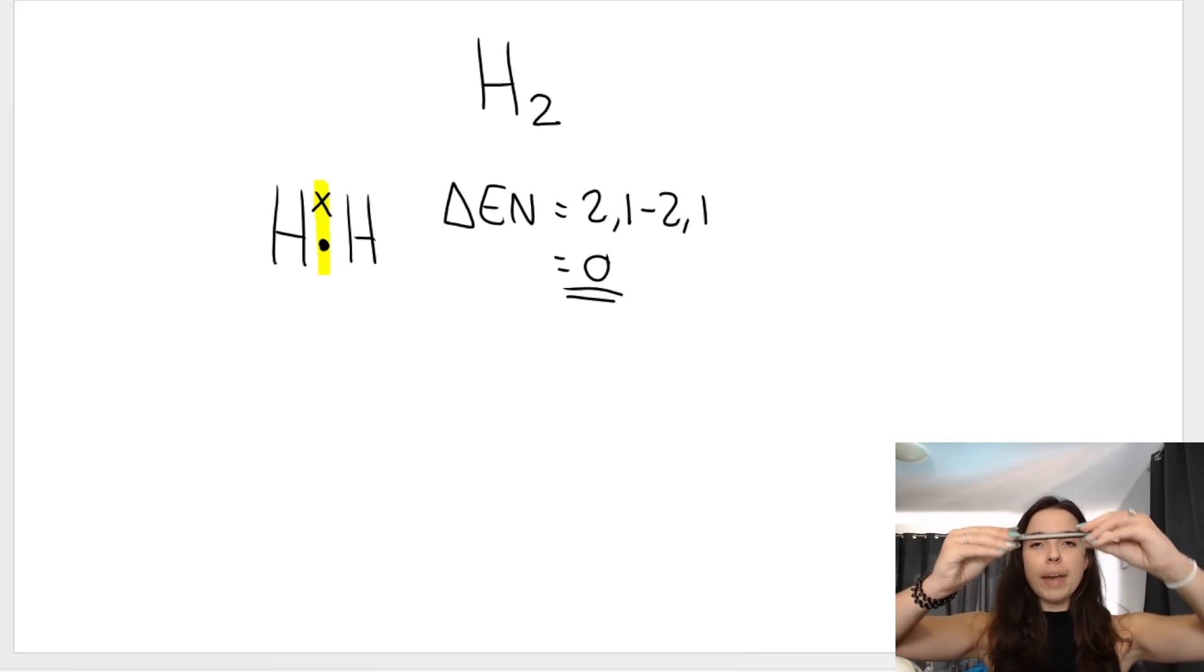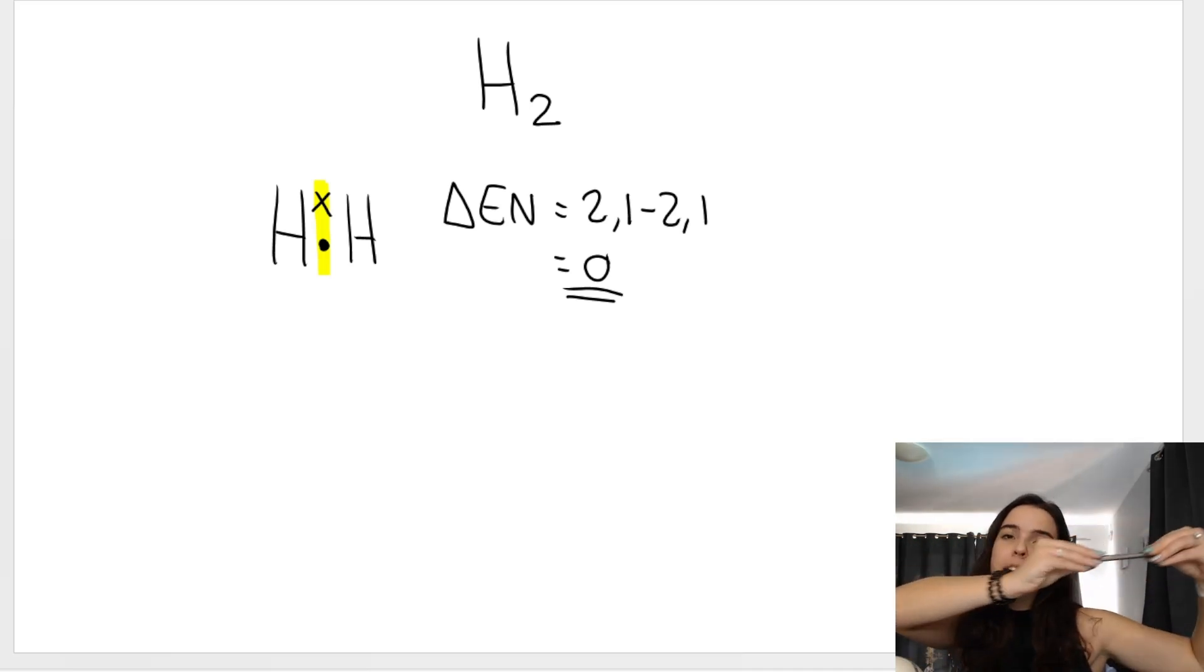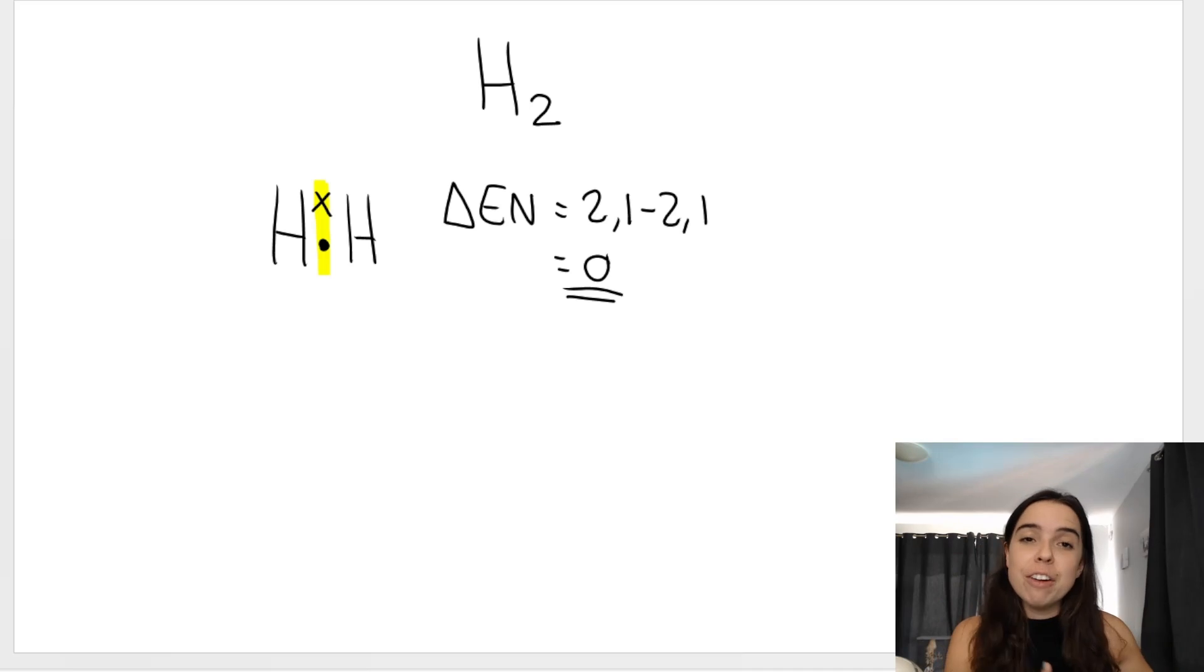One of these hydrogens doesn't have a greater pull on those shared electron pairs than the other. So when I describe this to my class, I say it's like two people holding a pen - they're sharing it evenly, one person isn't pulling the pen closer to them than the other person. They're sharing that pair of electrons evenly, it lies right in the center of them. And what that means is that one hydrogen isn't more negative or more positive than the other.